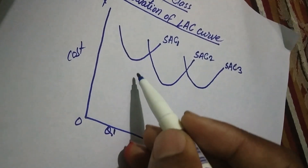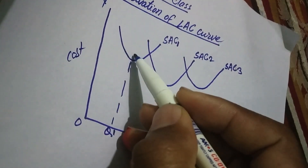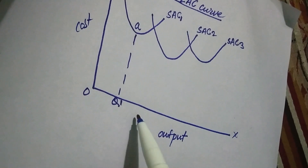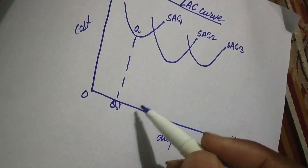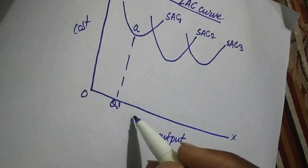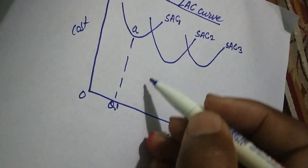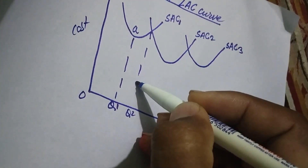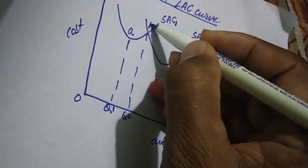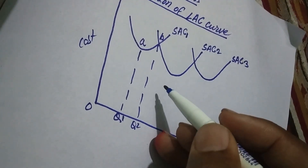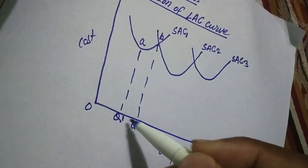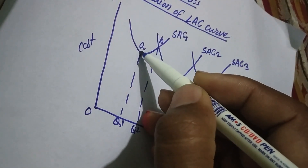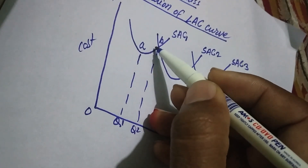Suppose the firm produces OQ1 level of output. This level of output can be produced at AQ1 per unit production cost. If there is an increase in the demand for goods and services in the market, the firm decides to produce more goods — say OQ2 level of output. This level of output can be produced at BQ2 per unit production cost. We see that when there is an increase in the level of output, the per unit production cost initially declines, and when it reaches its minimum level, thereafter the per unit production cost increases.